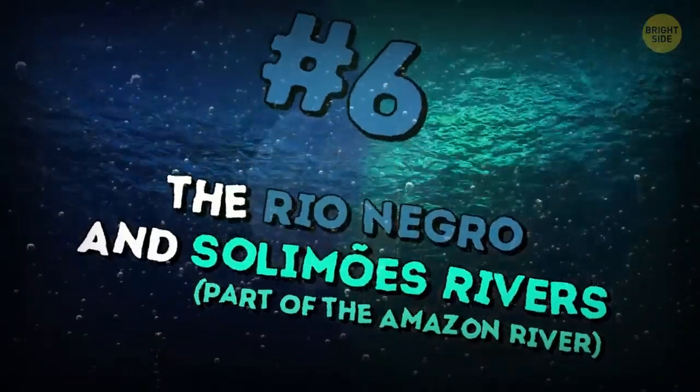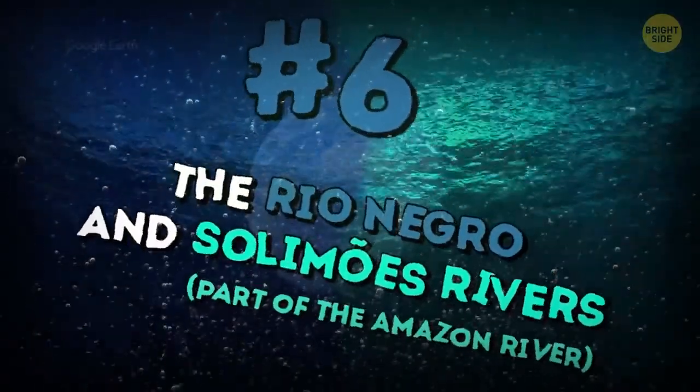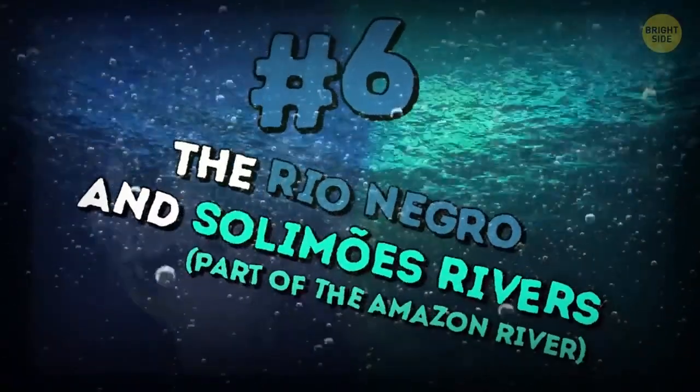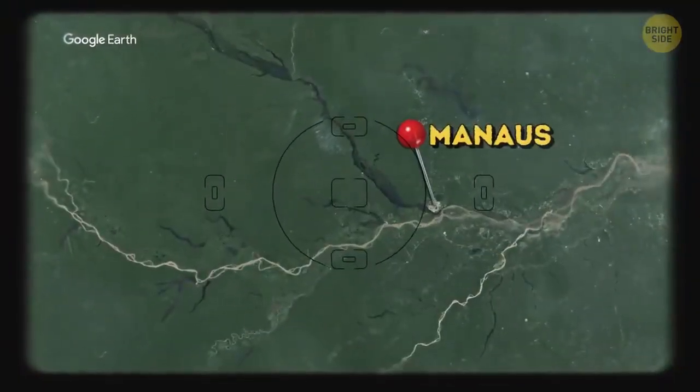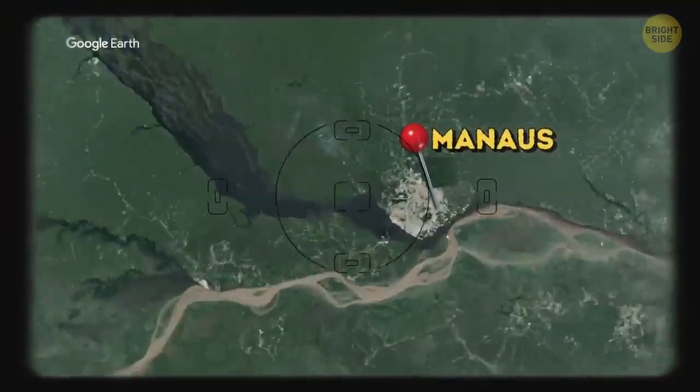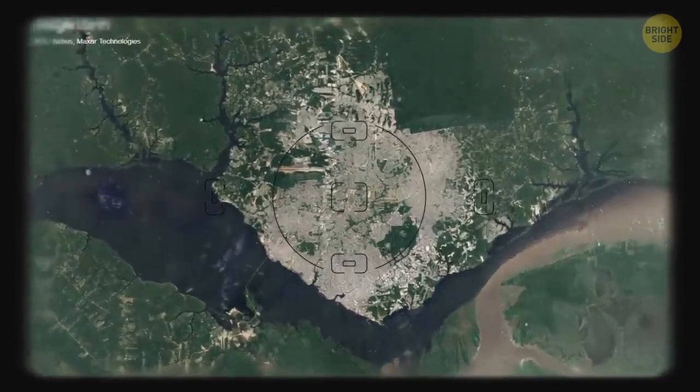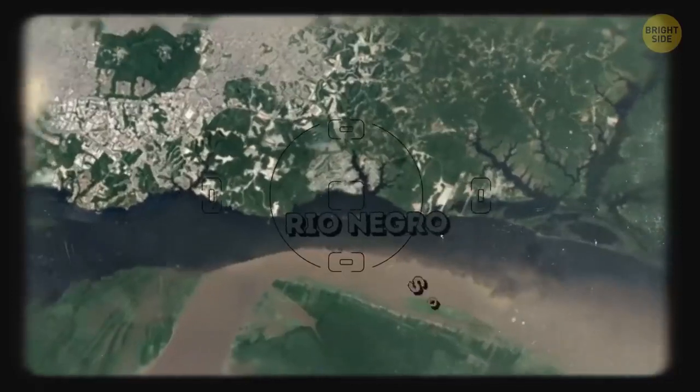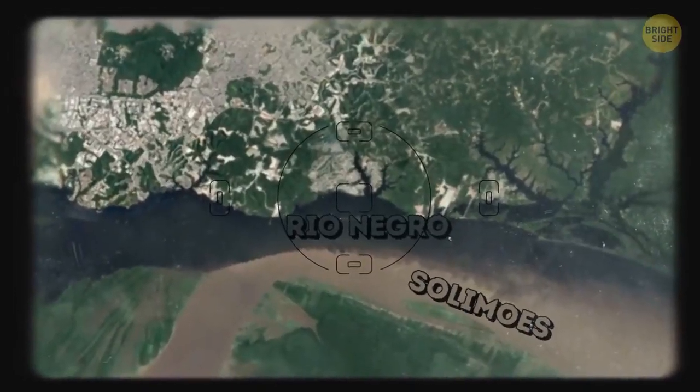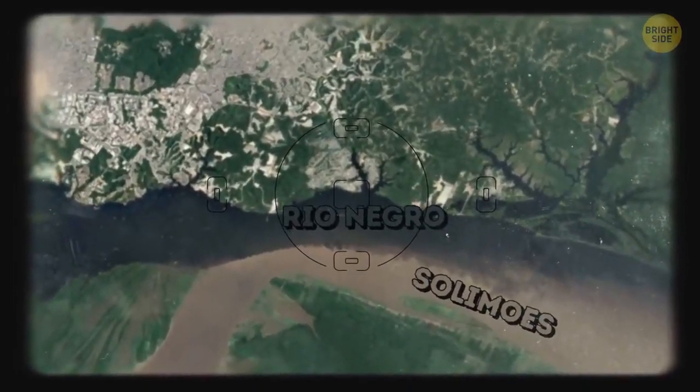The Rio Negro and Solimões Rivers, part of the Amazon River: Six miles from Manaus in Brazil, Rio Negro and Solimões Rivers run into each other but don't mix for about 2.5 miles. The Rio Negro is dark and Solimões light. They have a different temperature and speed of flow.